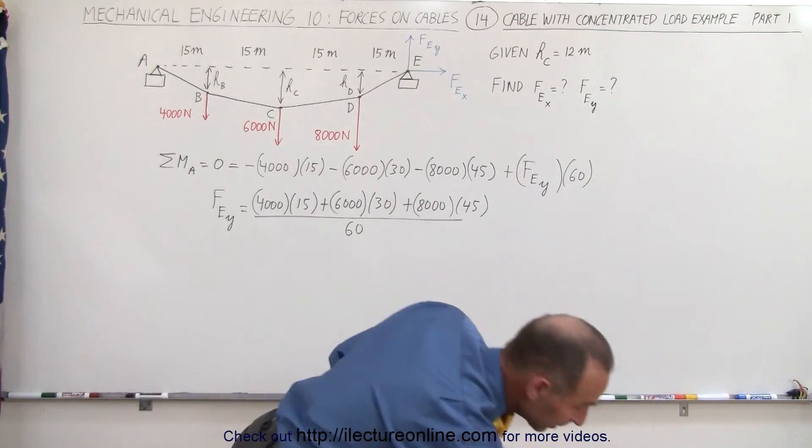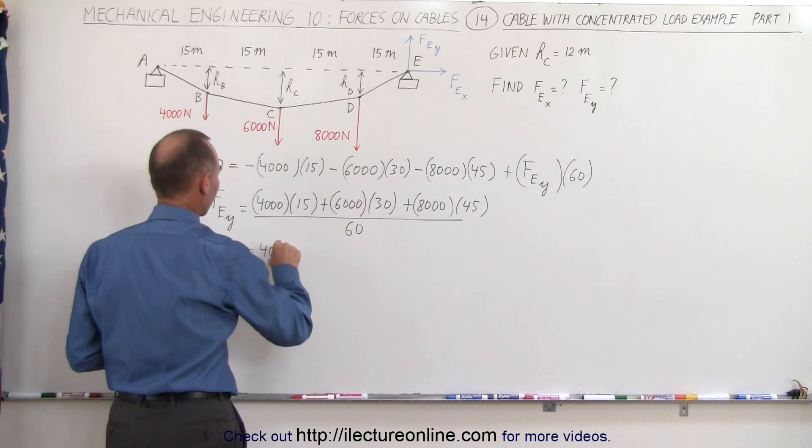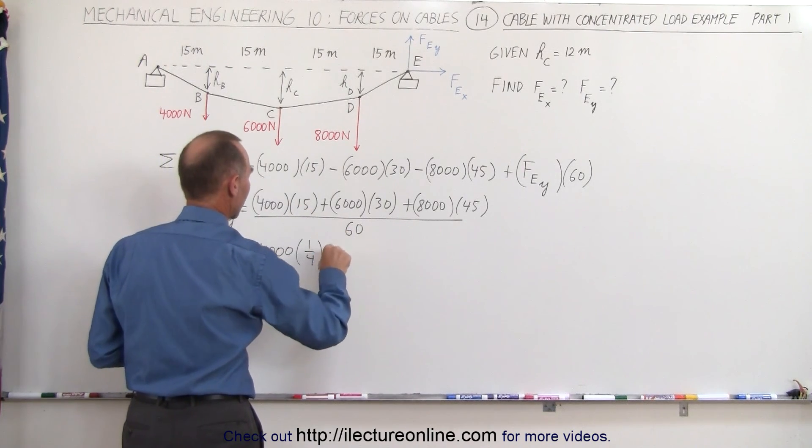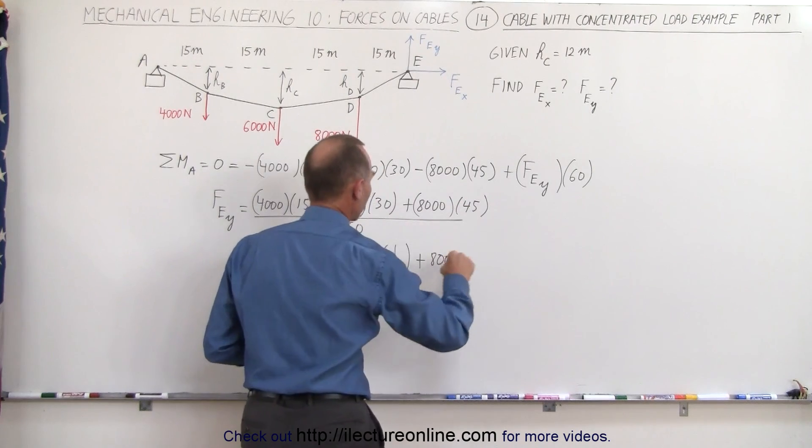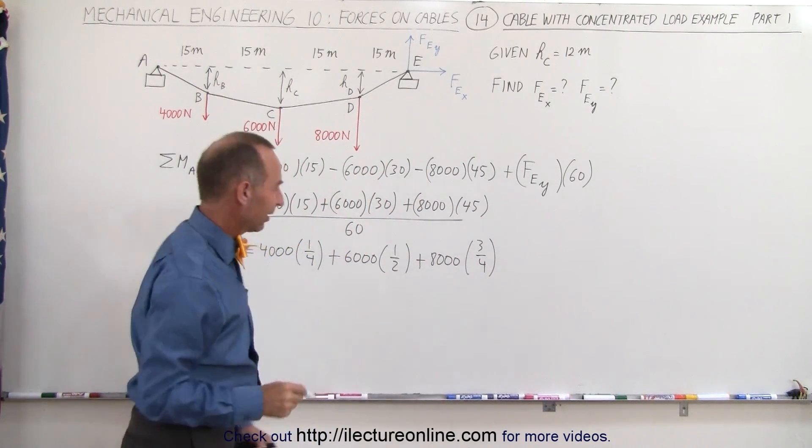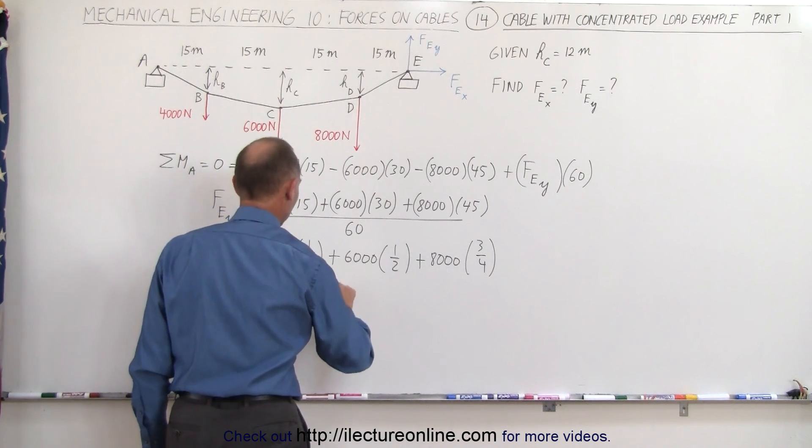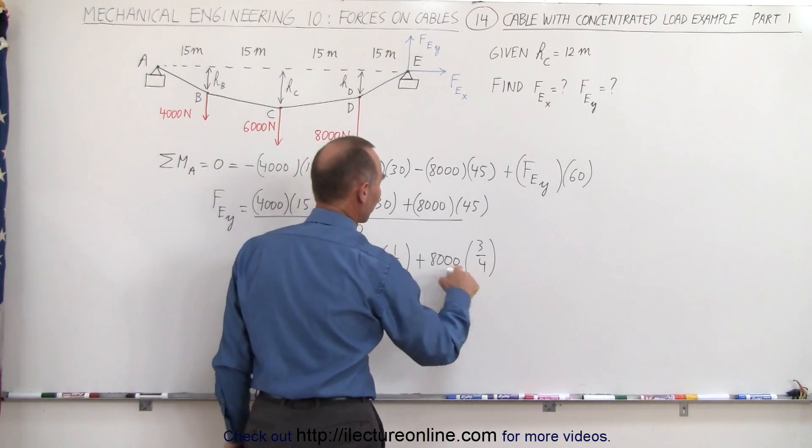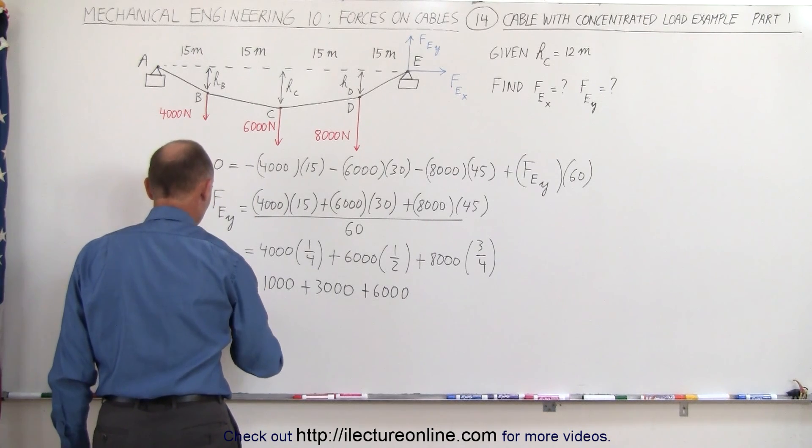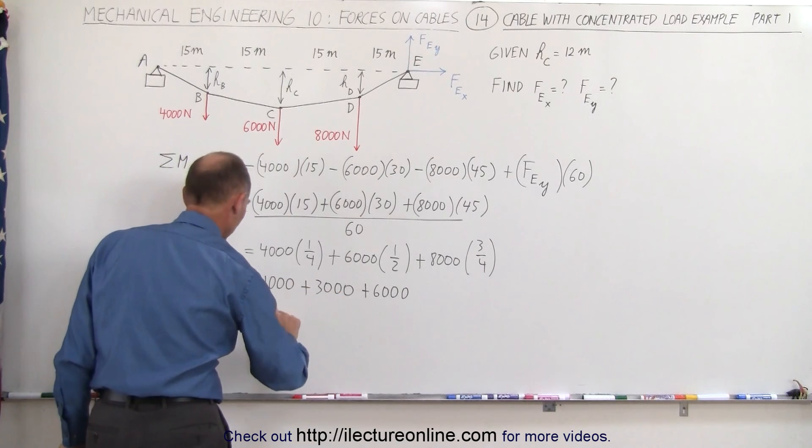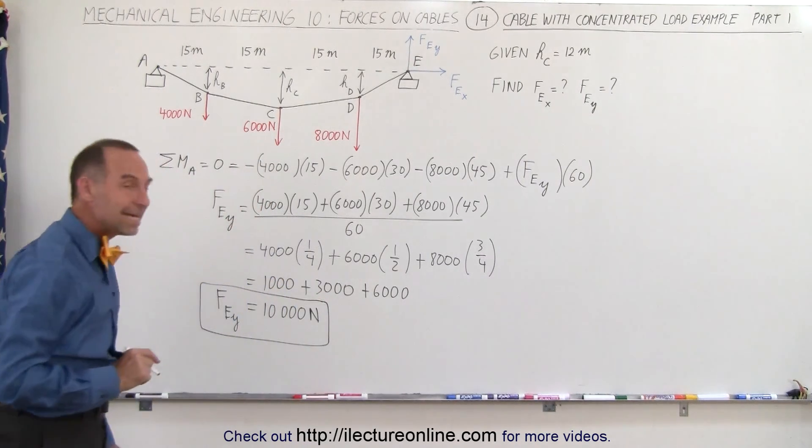All right, now we're ready with a calculator to calculate that. You know what, we can make it simpler here. This is 4,000 times 15 divided by 60, which is a quarter, plus 6,000, 30 divided by 60, which is a half, plus 8,000, 45 divided by 60, which is three-quarters. Who needs a calculator? 4,000 times a quarter is 1,000; 6,000 times a half is 3,000; and 8,000 divided by 4 is 2,000 times 3 is 6,000. Notice that the force component at the support point E in the y direction is equal to a total of 10,000 newtons.